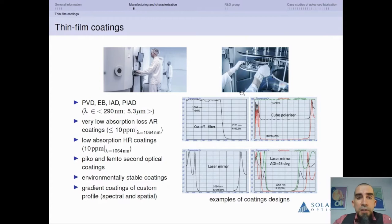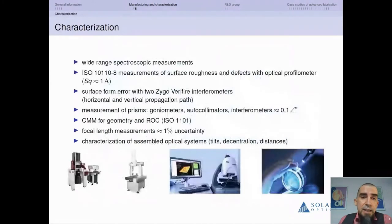We have a thin film coating department which uses physical vapor deposition. We operate in the spectral range from 290 nanometers up to 5 micrometers. We design the optical coatings, fabricate them, and characterize them spectrally. Everything is done in-house.